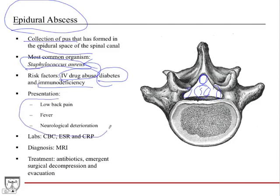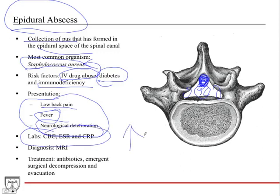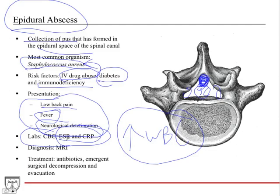Presentation — the hallmark triad is low back pain, fever because they're infected, and neurological deterioration as the abscess grows, presses on the cord and nerves. If it's in the lower area near the conus medullaris or cauda equina, it can cause those respective syndromes. Labs show elevated white count on CBC, elevated ESR and CRP — these are not highly specific but expect elevated values on an exam.